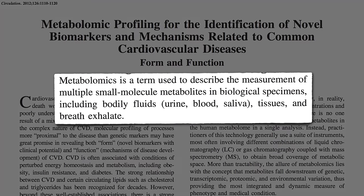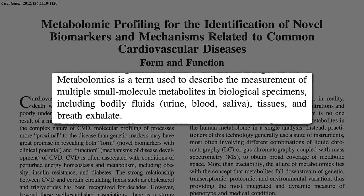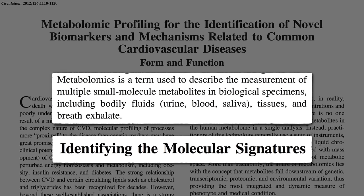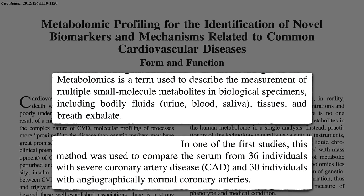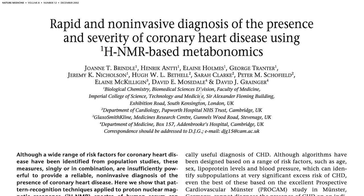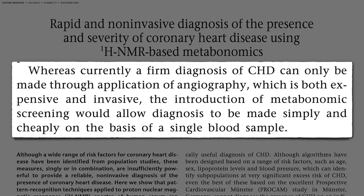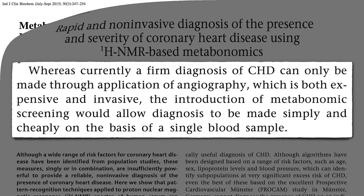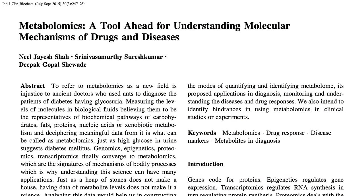Metabolomics is a term used to describe the measurement of multiple metabolites in biological specimens, like bodily fluids, with a goal of identifying molecular signatures. For example, if you compared the metabolic profile of those with severe heart disease to those with clean arteries, maybe we could come up with a cheap, simple, non-invasive way to screen people. If heart patients happen to have something in their blood that healthy people didn't, we could test for that, and maybe it would even help us understand the mechanisms of disease.